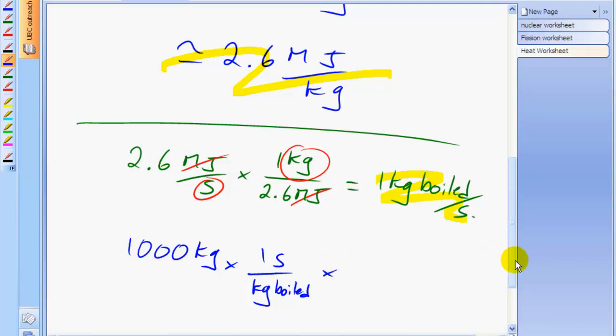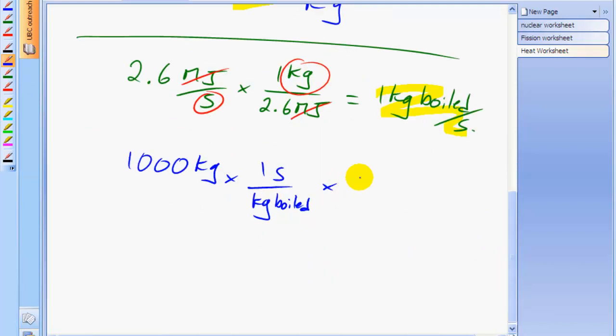And to turn that into units that are maybe easier to understand, we'll multiply this by 1 minute for every 60 seconds to convert it into minutes. So seconds cancel, the kilograms cancel. What we're figuring out here is the amount of time in minutes to boil off 1,000 kilograms given a heat source of power 2.6 megawatts. And the answer to this is 16.67.